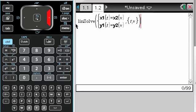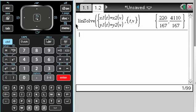But I don't know that they're there at the same time, so I'm going to use this to solve that. I get that. So the first plane is there at 220 over 167, and the second plane is there at this ridiculous number, 4110 over 167.